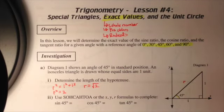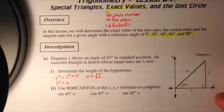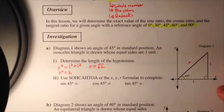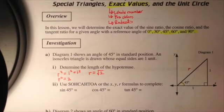R squared is equal to x squared plus y squared, so one squared plus one squared. R squared equals two, and as an exact value, r equals rad two. The next thing we need to do is use SOHCAHTOA or the XYR formulas to find sine 45 degrees, cosine 45 degrees, and tan 45 degrees.